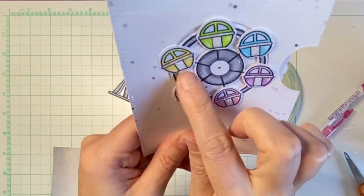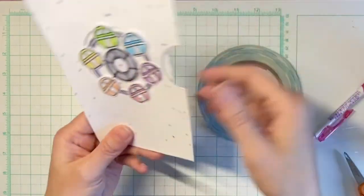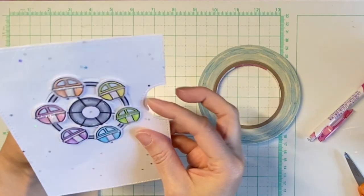And here I'm pointing out why it was important to use the same paper for the wheel and the background, because it peeks through the open parts of the ferris wheel.